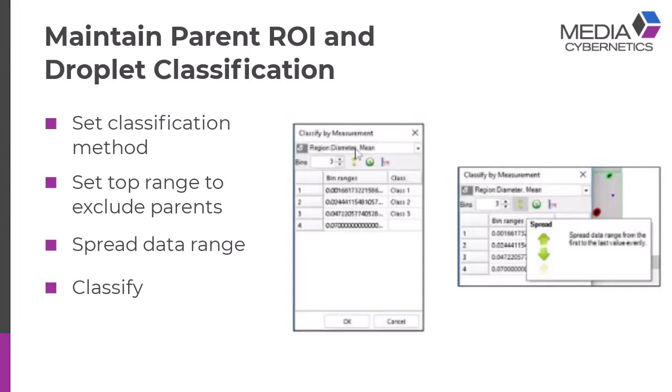One thing you just want to be careful of, whatever parameter you're selecting, make sure that the top level, in this case the top size of that bin, does not include the parent. And I'll just show a quick example of that. And then, you can name the class as small, medium, large, whatever is appropriate, or give it size ranges. Here, I just did it using the default values of finding the min to max regions.